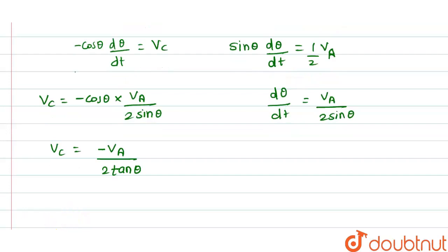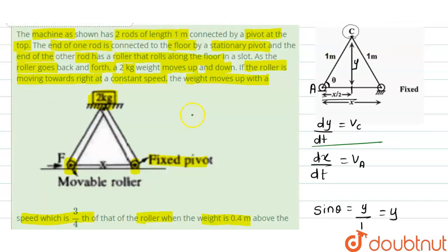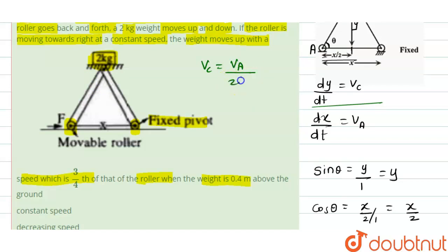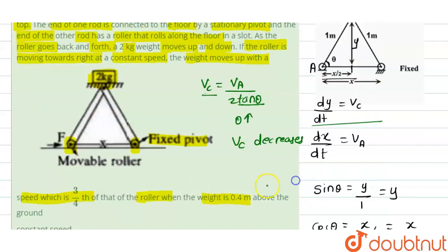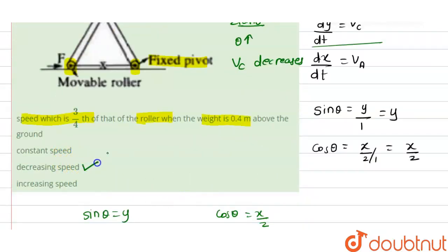So the expression for the velocity of the mass is vc = va / (2 tan θ). We only consider the magnitude. Now, if the roller moves towards the right, the angle θ keeps increasing. As θ increases, tan θ also increases, and therefore vc decreases. So when the roller moves towards the right, the speed of the mass decreases. The correct answer is option C.